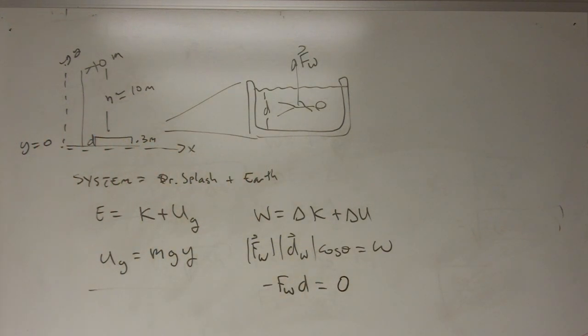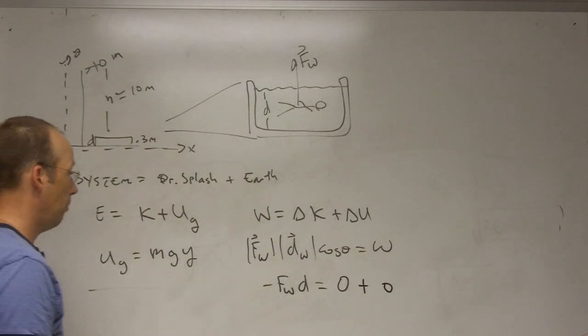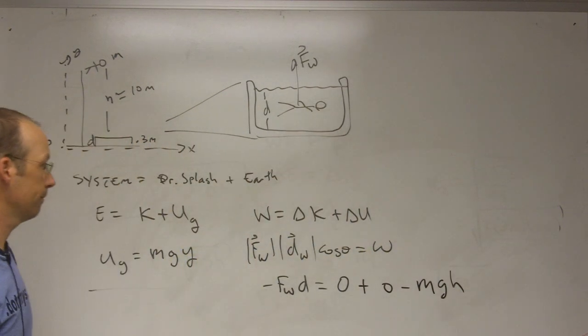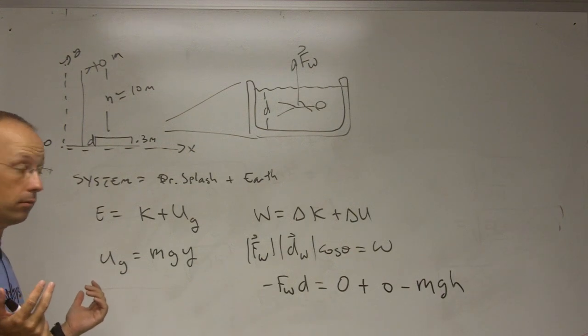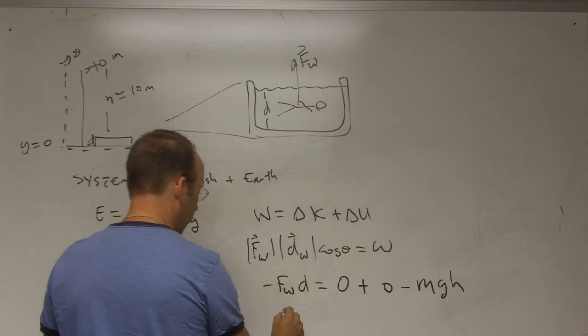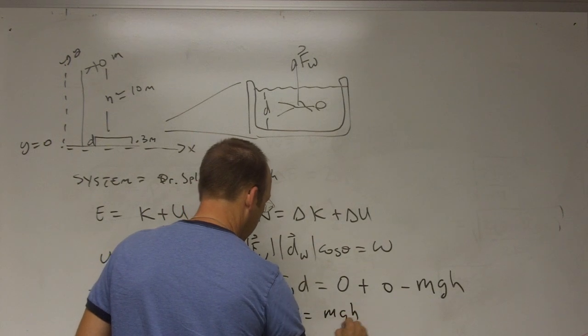What about the change in potential? It's going to be final potential which is going to be zero because he's at y equals zero minus initial MGH. So that's it. Do I have enough to solve for F? I do. Okay. So I got those zeros in there. So I get FW equals MGH over D.